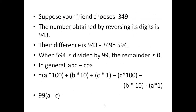Suppose your friend chooses 349. Reversing its digits: 9 moves to hundreds place, 4 stays in tens place, 3 moves to ones place — giving 943. The difference is 943 minus 349 equals 594. When 594 is divided by 99, the remainder is 0.